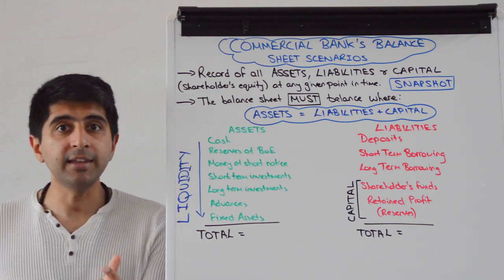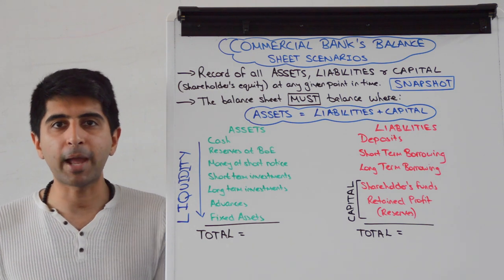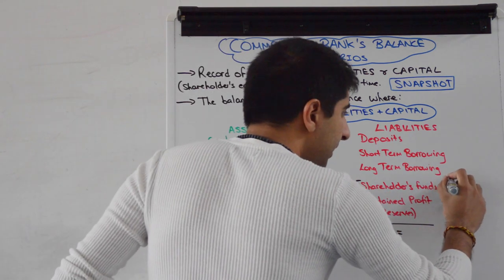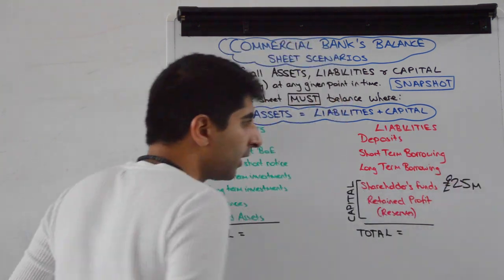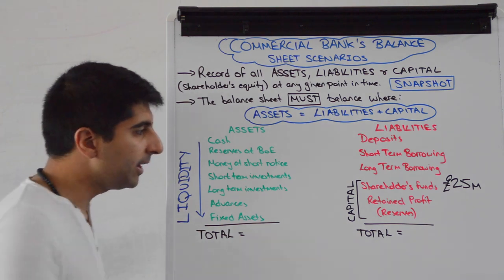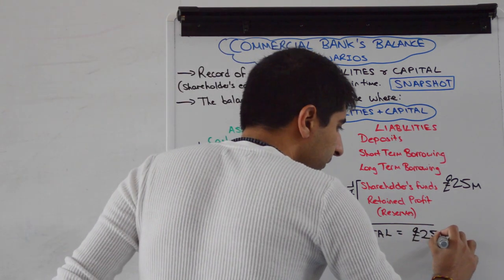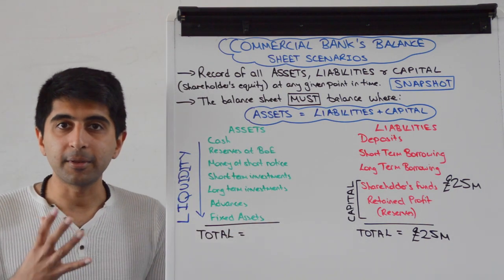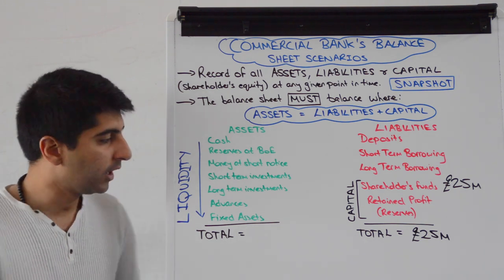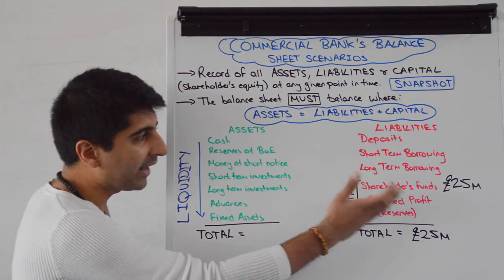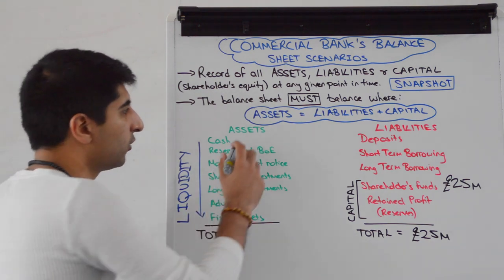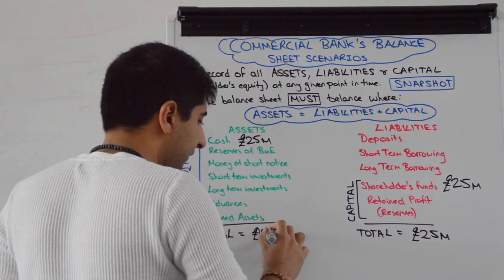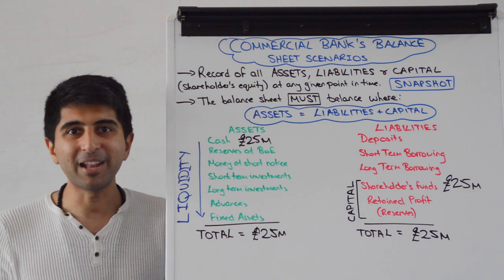We're going to start with the bank being created by shareholders putting in 25 million pounds of their money into the bank. How will that be recorded? Well, it's 25 million pounds of shareholders' funds, which means total liabilities is going to be 25 million pounds. How is that going to be recorded on the asset side? Assets must equal liabilities plus capital, so there's got to be 25 million pounds of assets — recorded directly as cash. Total assets is 25 million pounds. We have a balanced balance sheet.